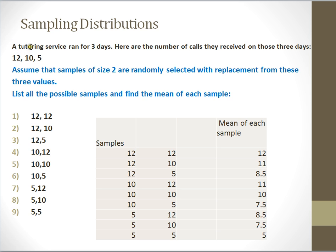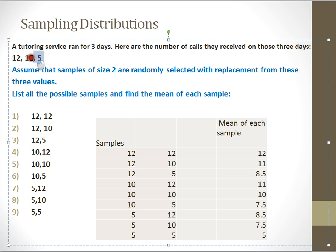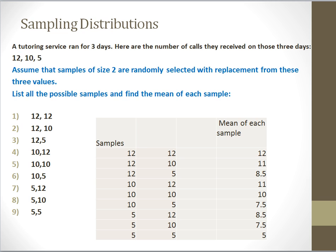A tutoring service ran for only three days. The number of calls received by the tutoring service on each of the three days was 12 calls, 10 calls, and 5 calls. These three values — 12, 10, and 5 — represent our population of tutoring service calls.